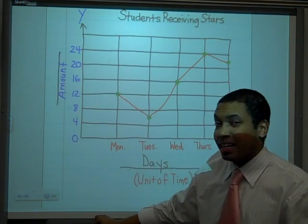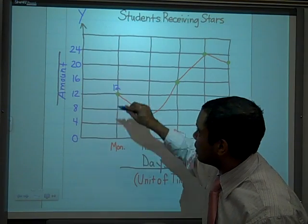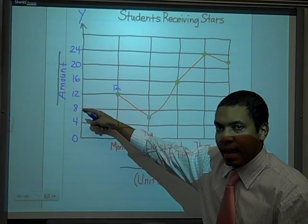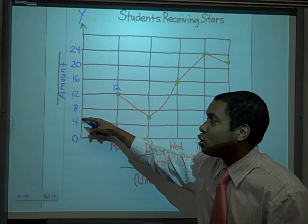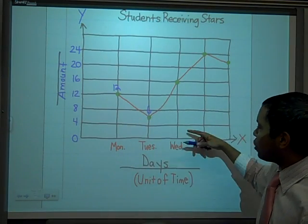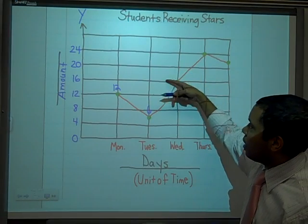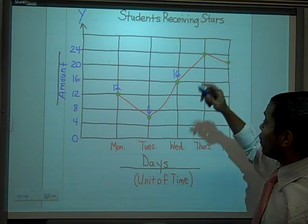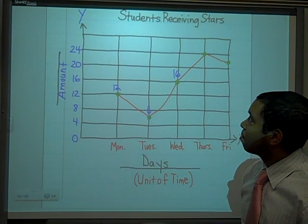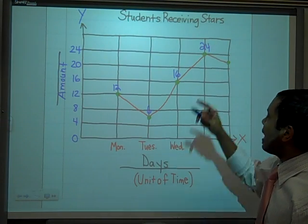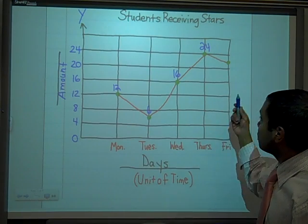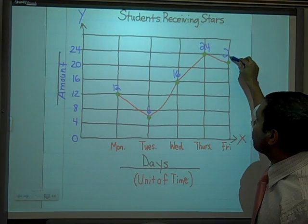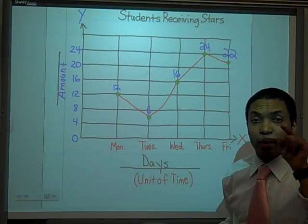How many students received stars on Wednesday? It's right on the line — sixteen. How many students received stars on Thursday? Twenty-four. And on Friday, the point is right between twenty and twenty-four, so two more than the bottom line of twenty — that's twenty-two. So we've now labeled all the actual points: Monday=12, Tuesday=6, Wednesday=16, Thursday=24, Friday=22.